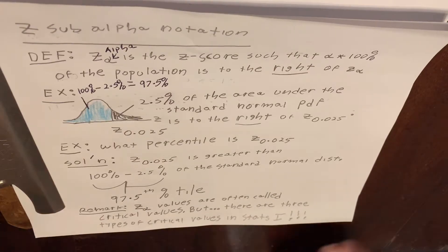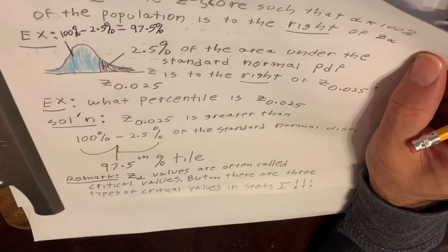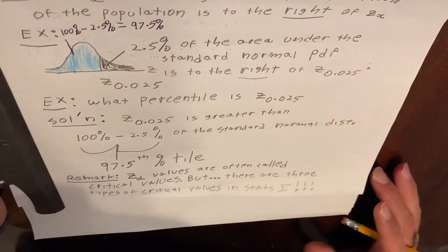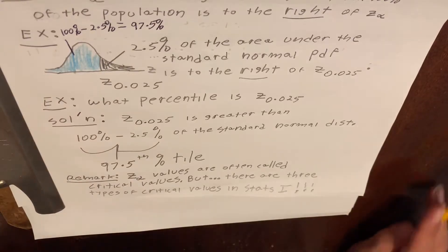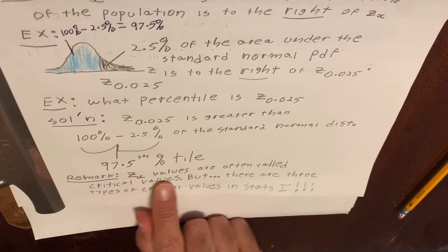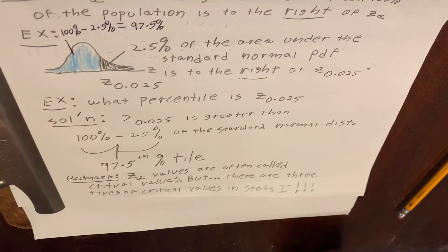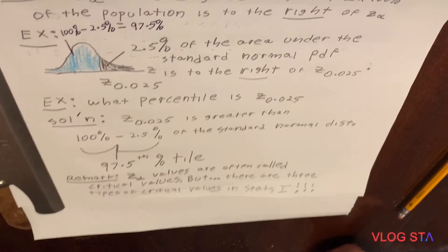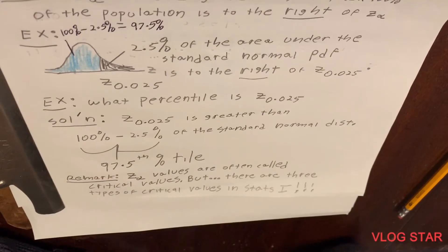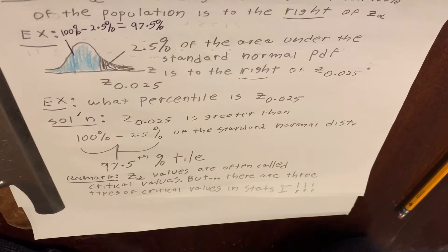I want to give you a little remark that I know confuses students all the time, particularly on exams. Z sub alpha values are often called critical values, but there's a problem with this. There are actually three types of critical values in a Stats 1 class. We have left-sided tests or left-tailed tests, which have left-tailed critical values. We have right-sided tests, also called right-tailed tests, which have right-tailed critical values. We also have two-tailed tests, which means we have two-tailed critical values.